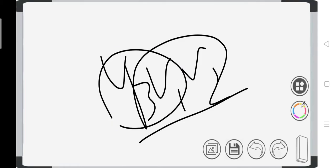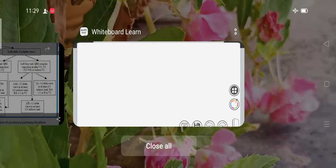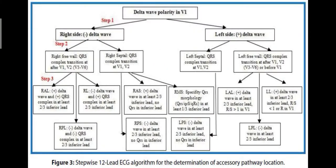If the transition occurs after V3, you are dealing with a lateral posterior pathway. If the transition is early at V1 or V2, you are dealing with a septal posterior pathway. Now for the left-sided pathway: RBBB morphology with transition at V1 or V2 indicates a left septal pathway. If transition is after V2-V3, it is a left free wall pathway.